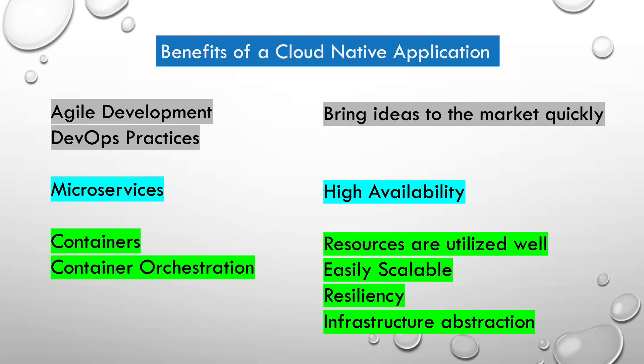Basically, to summarize, a cloud native application is not about where the application is running. Rather, it is about incorporating all these different principles and practices — for example, agile methodologies, DevOps practices, containers, container orchestration tools, and microservice architecture. All these things combined make a cloud native application.